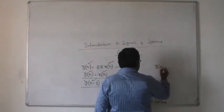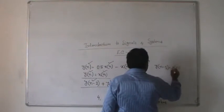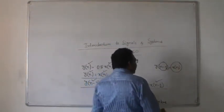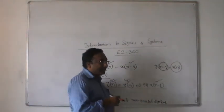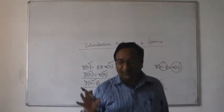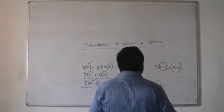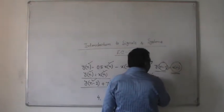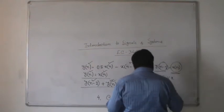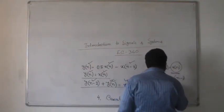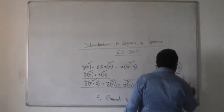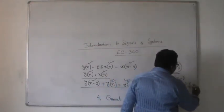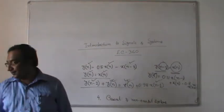Now consider y(n-1) = x(n). Since n is greater than n-1, the output is depending on the future value of input, so it is a non-causal system. Another example: y(n) = 0.11·x(n-1) + x(n) - 0.8·x(n+1). Here the output is also depending on a future value of input, x(n+1), so this is another example of a non-causal system.